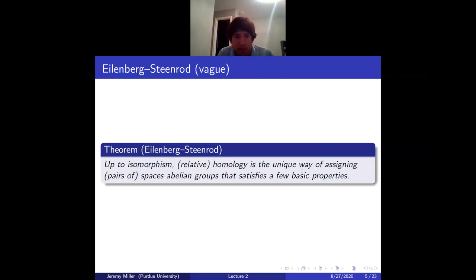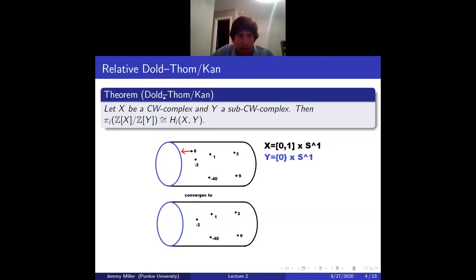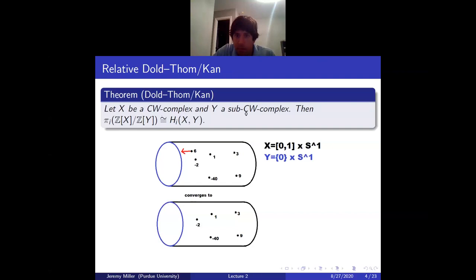I'm going to list some basic properties of homology, and the theorem is that any collection of functors and natural transformations satisfying these basic properties is going to agree with homology. The way we're going to prove the relative Dold-Thom-Kahn theorem is we'll look at the functor that sends a pair of spaces to the homotopy groups of the free abelian group on one mod the free abelian group on the other, check that functor satisfies the Eilenberg-Steenrod axioms, and hence prove the theorem.